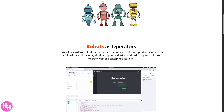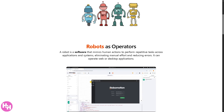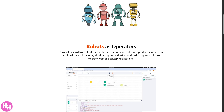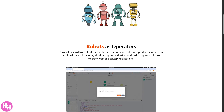That wraps up our walkthrough of Robo Motion. Whether you are automating simple tasks or managing complex workflows, Robo Motion definitely proves to be a powerful tool for business automation. If you found this video helpful, go ahead and give it a thumbs up — it really helps the channel grow. Don't forget to subscribe and hit the notification bell so you never miss an update. Thank you so much for watching, and we will see you in the next video.